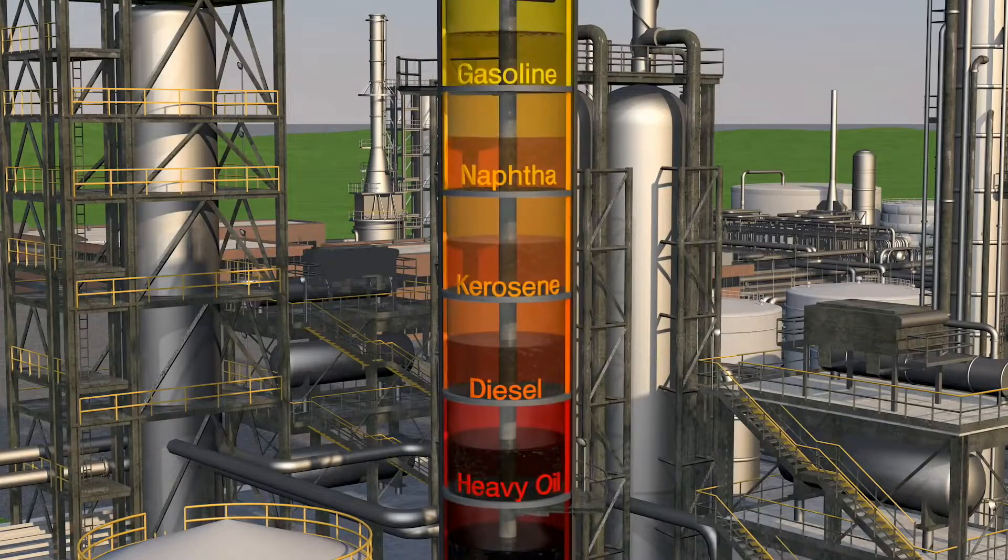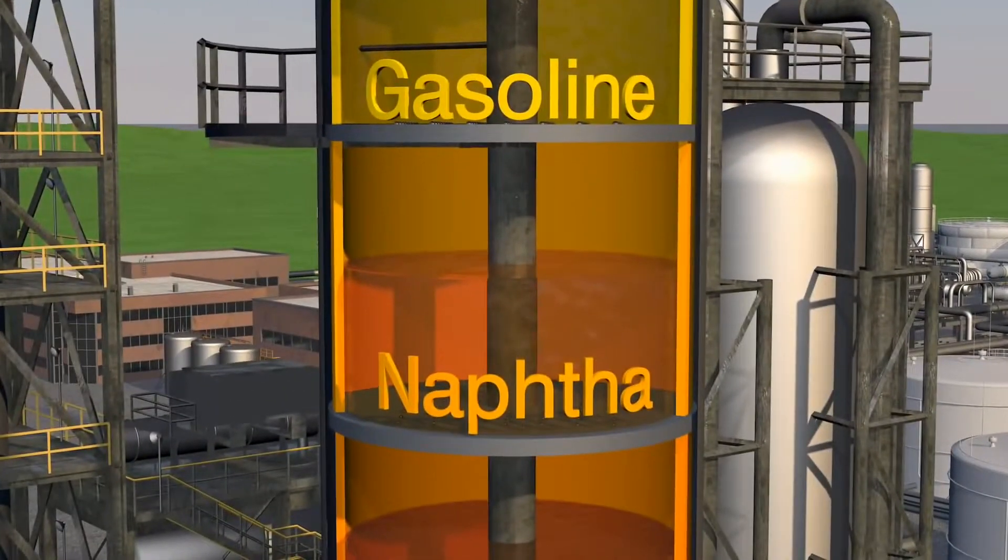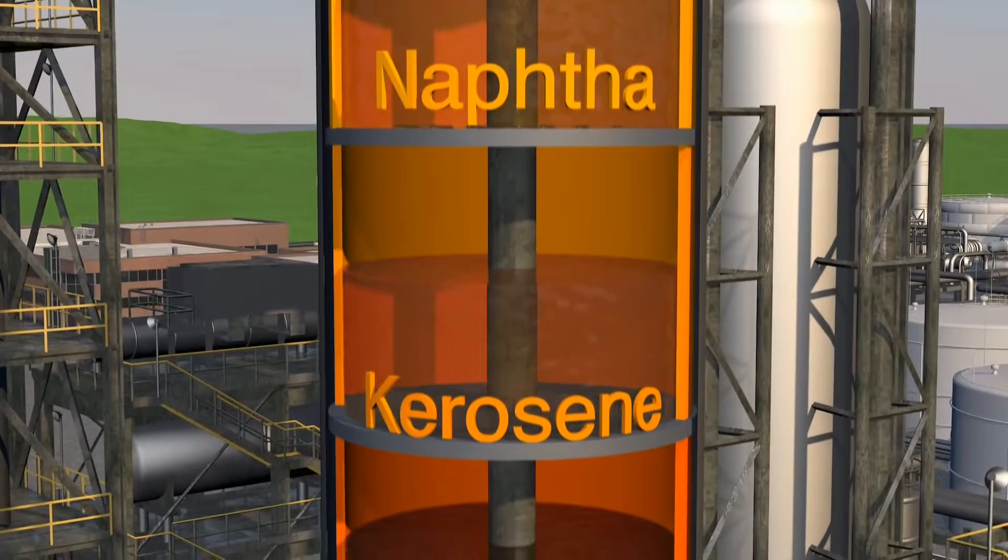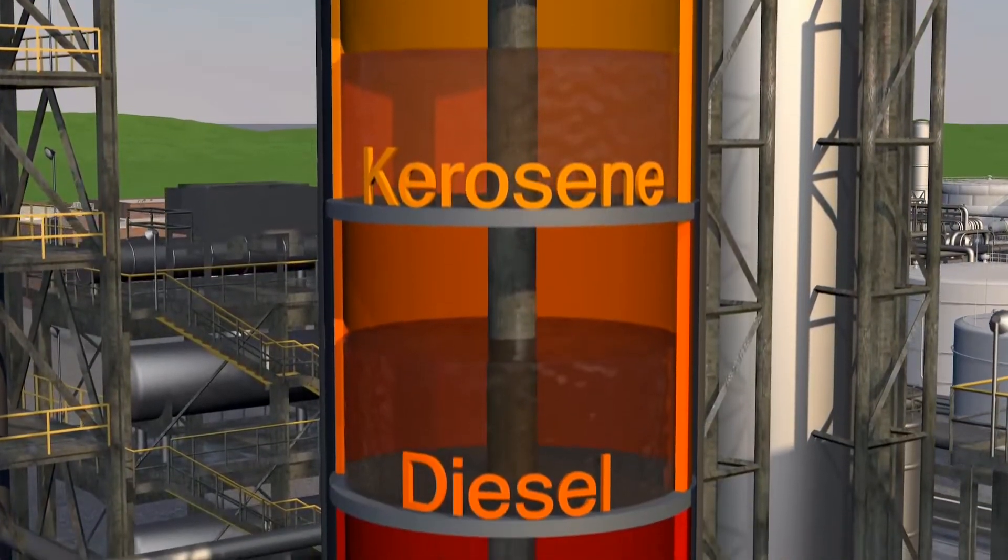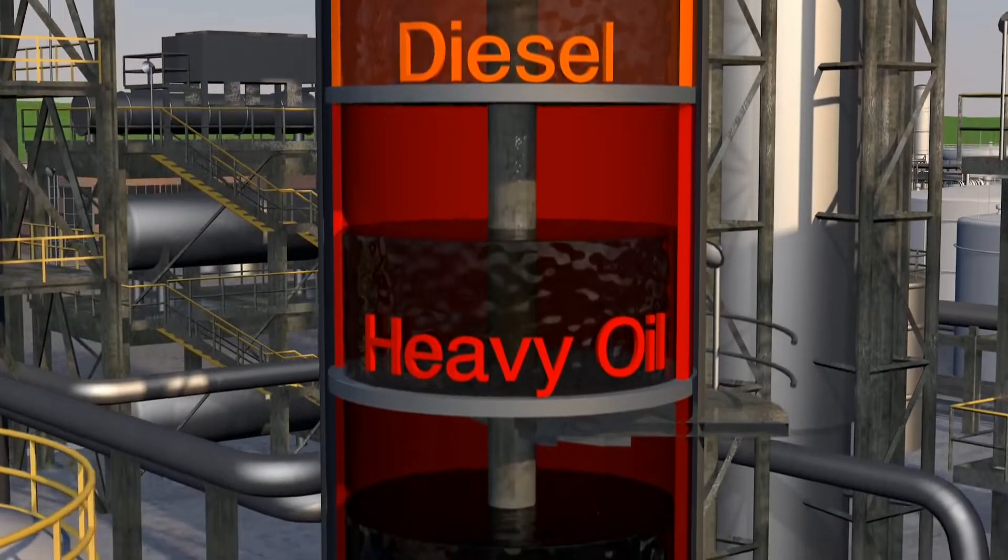As it rises and cools, the vapor turns back into a liquid. Using stacks of trays, the liquid is easily collected and separated by weight. The lighter and medium weight liquids require less processing before they're ready to be used in cars and trucks. The heavier liquids need more processing to become useful.